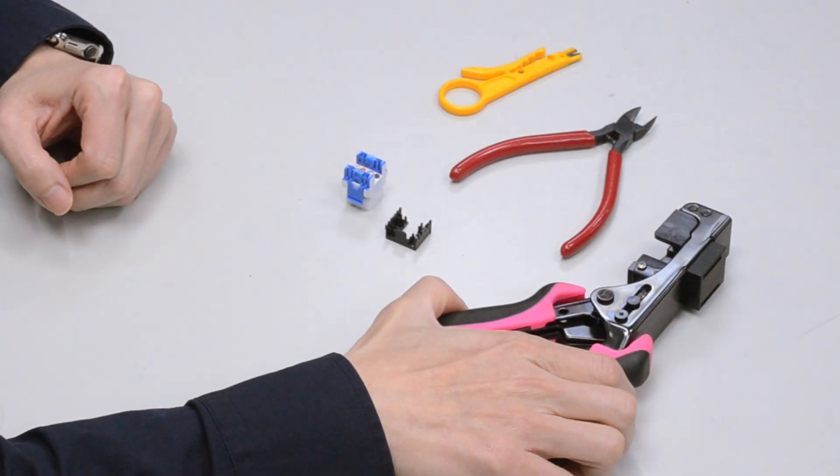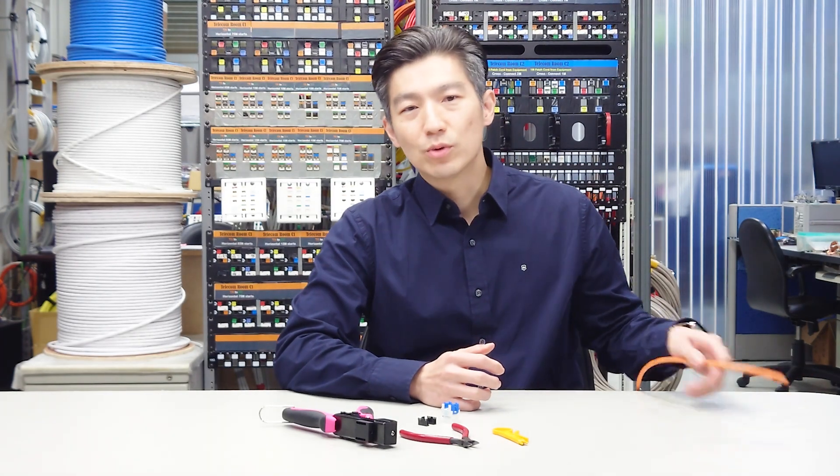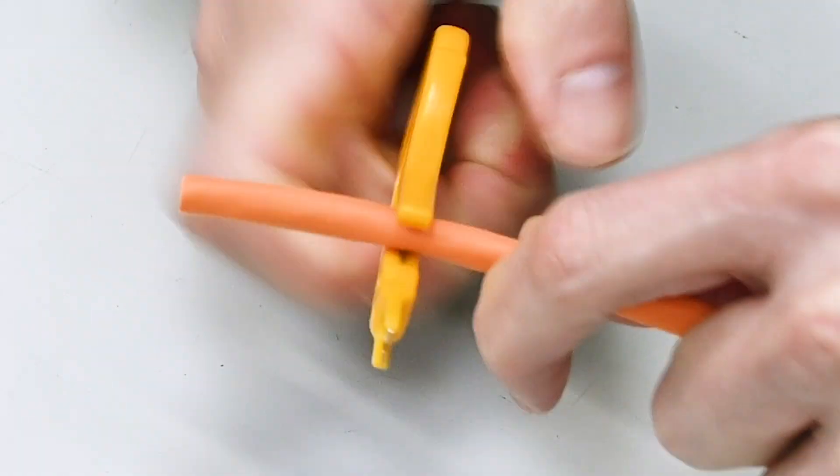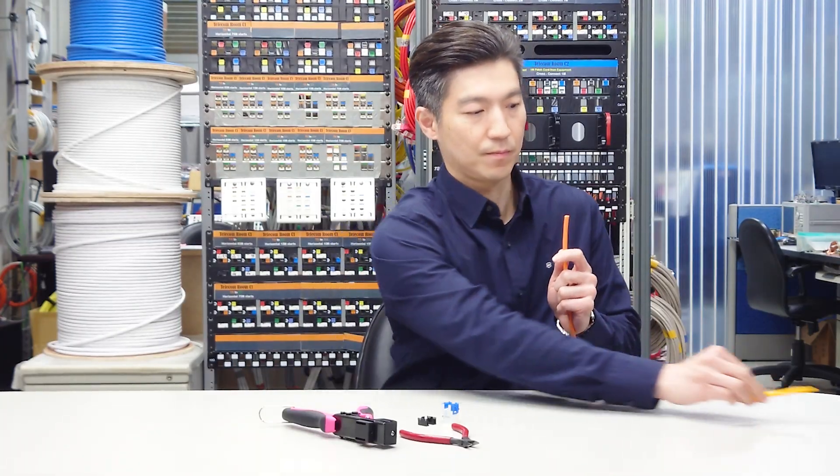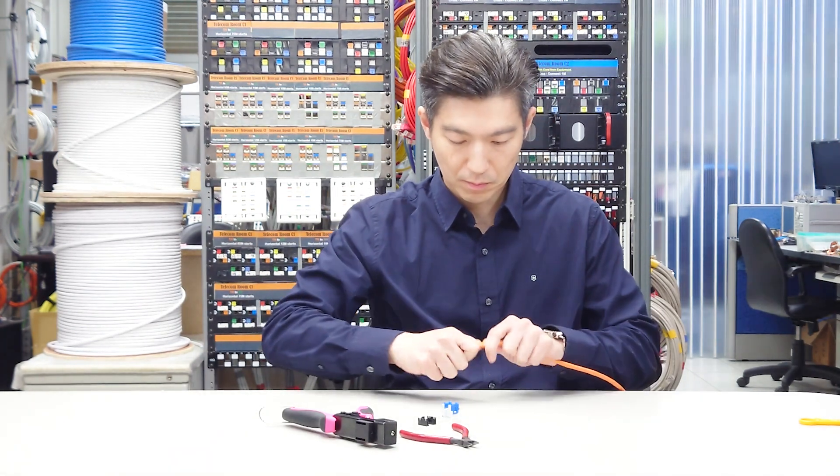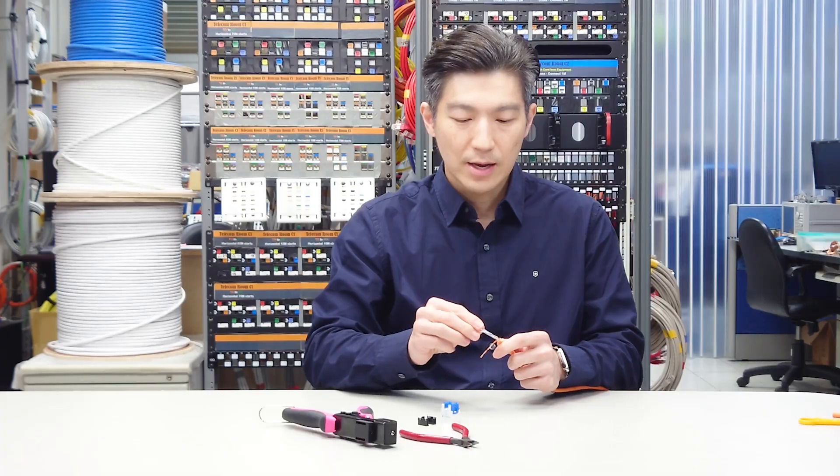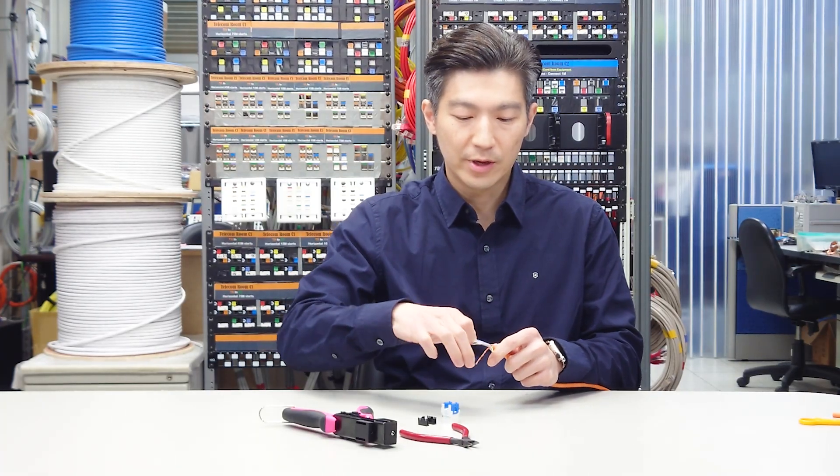I need a cable stripper and my big helper, EZ termination tool. It starts with stripping the cable jacket for approximately 1.5 inches. Split each pair and cut off the filler in the middle.